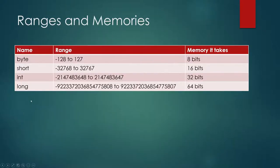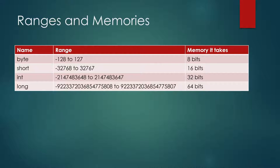What are the differences between them? Their difference is the memory it takes and the range of numbers it can store. For example, byte can only store numbers between negative 128 to 127. Anything smaller or larger cannot be stored in byte. We don't use long all the time because the memory it takes is larger. Usually we use int for smaller numbers and long for very large numbers. Byte and short are not used very often since they can only store really small numbers, so usually we just use int and long.